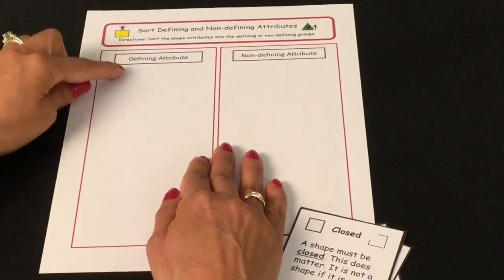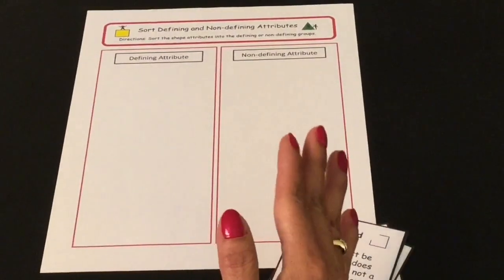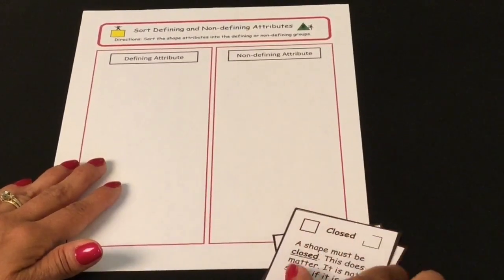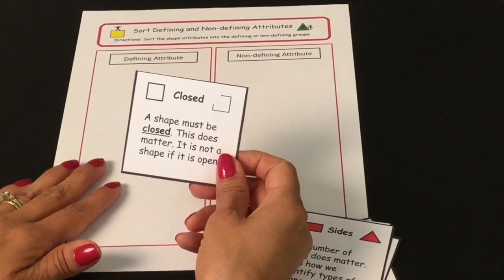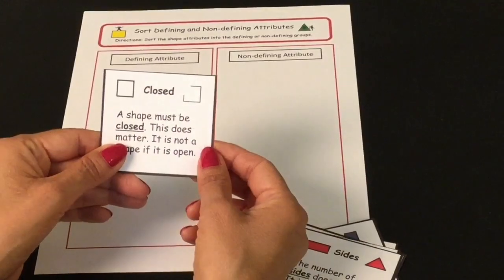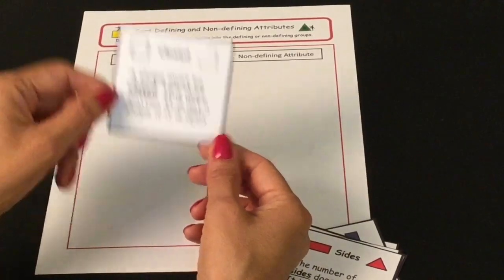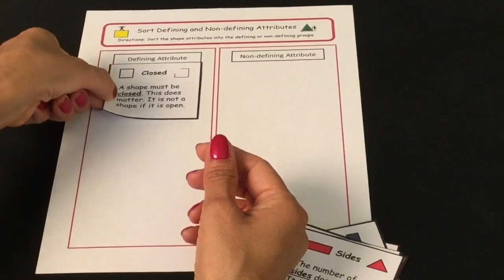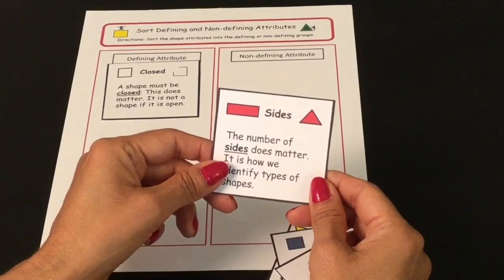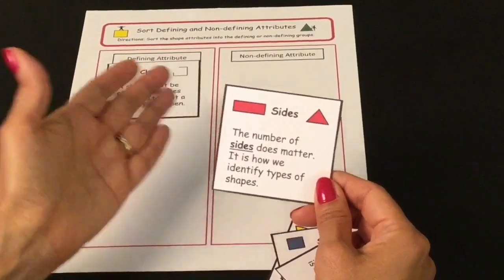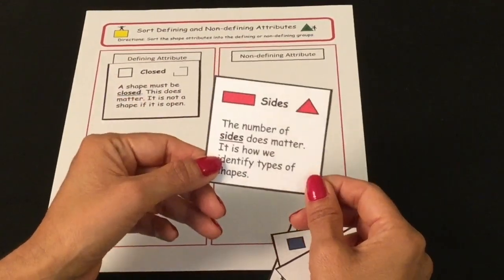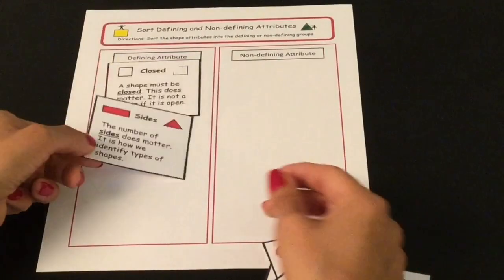The first thing we're going to look at is defining attributes. These are attributes that do matter — shapes have to have these characteristics or traits in order to be called a shape. The first one is closed. A shape must be closed; if it's open like this one, then it's not considered a shape. So a defining attribute is that the shape is closed. The next defining attribute is the number of sides, because it's how you know it's a square or a triangle or a rectangle.